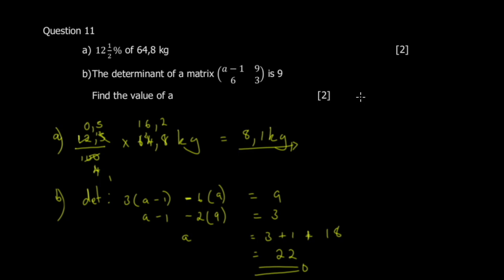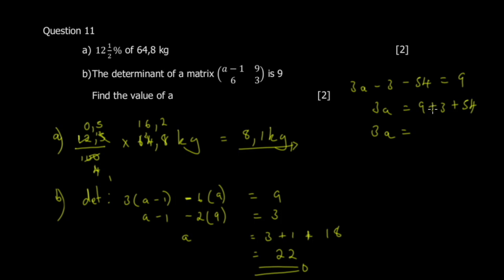The longer but safer method is to expand fully: 3a minus 3 minus 54 equals 9, so 3a equals 9 plus 3 plus 54. That's 9 plus 3 equals 12, plus 54 equals 66. Then 66 divided by 3 equals 22. Both methods give a equals 22, but the expanded method is safer if you're not confident.